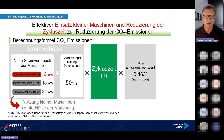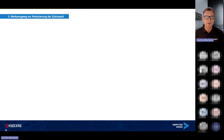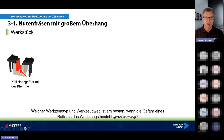Im zweiten Teil schauen wir uns die hohe Bearbeitungsproduktivität als Fokus an. Das neue Thema: große Überhanglängen. Warum müssen wir unter Umständen mit großen Überständen arbeiten? Es gibt das Problem, dass bei Klemmvorrichtungen am Bauteil das Werkzeug länger als nötig sein muss, um Kollisionen zu vermeiden. Man muss hier schauen, dass man auch mit großem Überhang arbeiten kann.